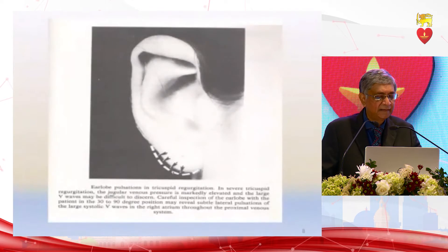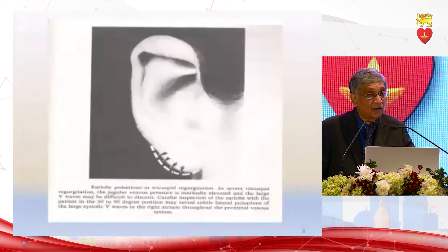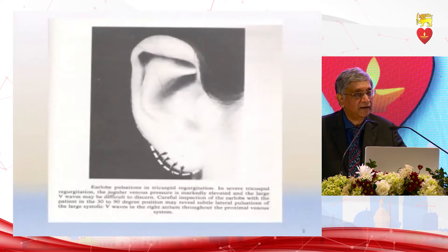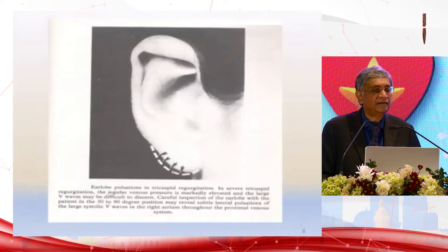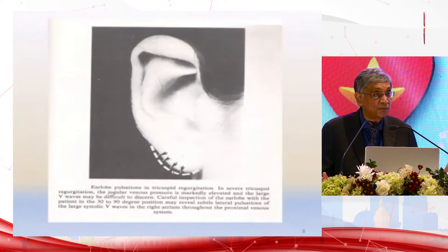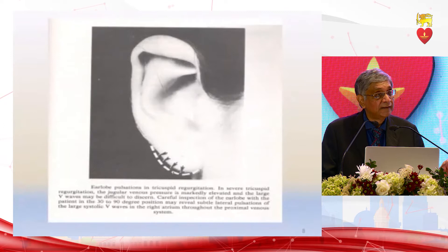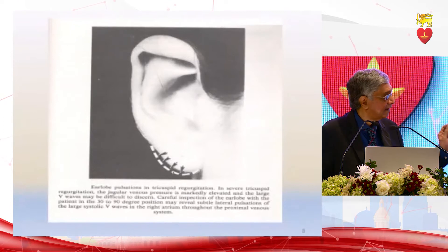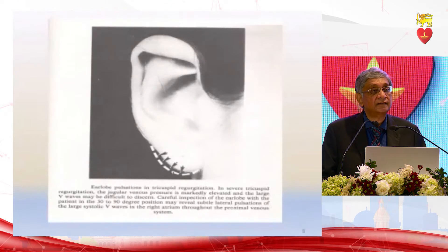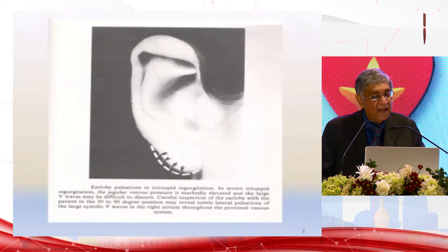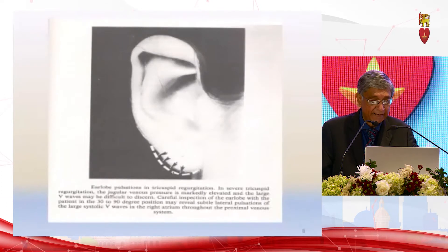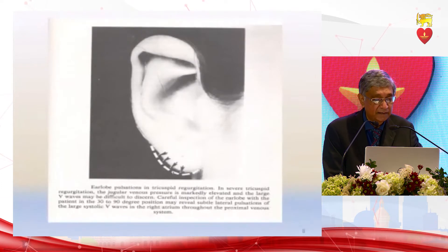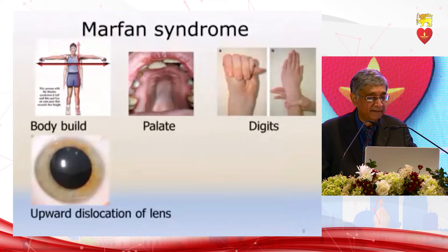This is the Müller-Schvinn sign. With tricuspid regurgitation the venous system transmits pulsations — you might see the pulsations in the earlobe and also in the varicose veins of the lower limb. If these pulsate, it is an indication of significant tricuspid regurgitation.